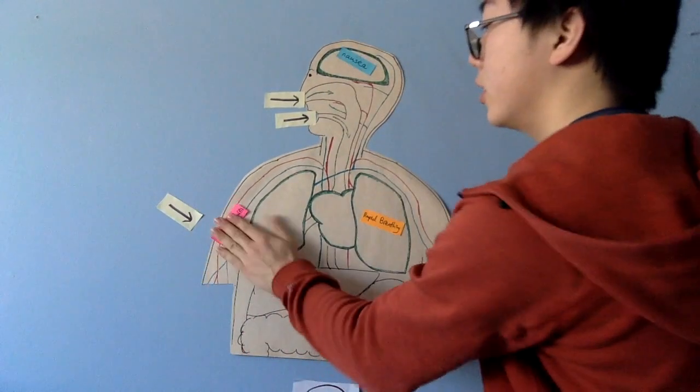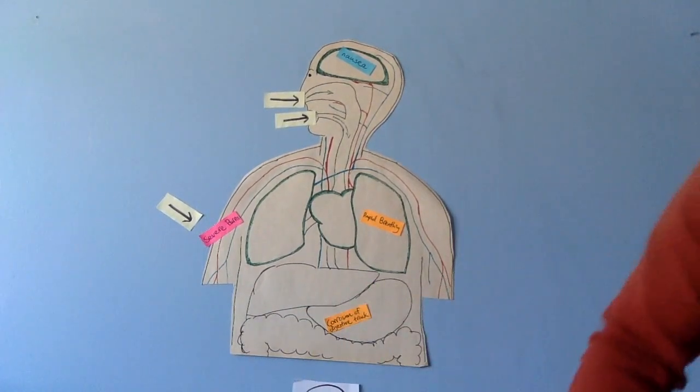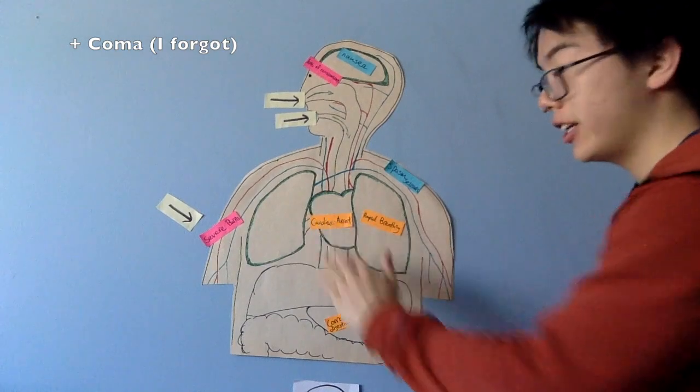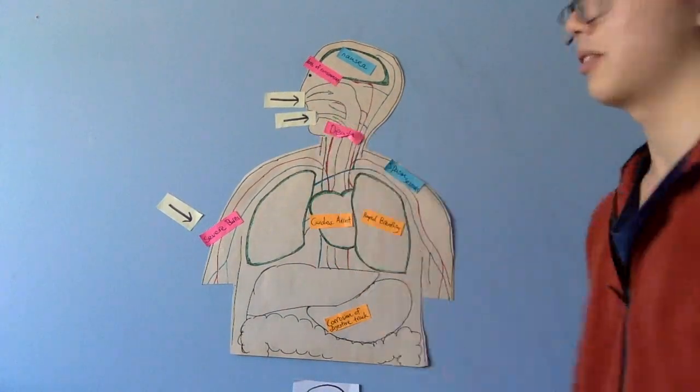Your respiratory system. Symptoms will show rapidly following exposure to sodium cyanide include rapid breathing, nausea, severe burns, corrosion of digestive tract, loss of consciousness, muscle spasms and seizures, cardiac arrest, and ultimately death, all of which can occur within just minutes.